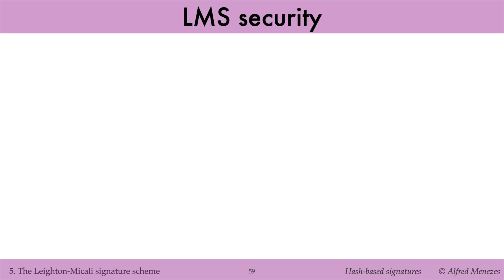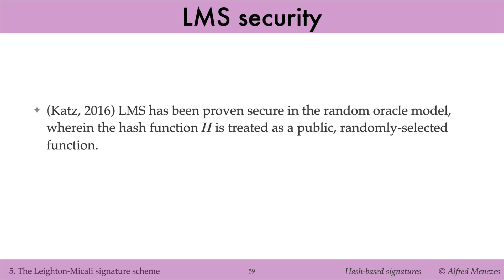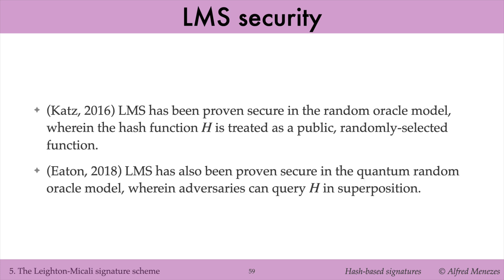The enhancements introduced by Leighton and Macaulay, including the use of unique prefixes for all hashed data, enable a formal security analysis of LMS. In 2016, Cats proved that LMS is secure in the Random Oracle model, where the hash function H is treated as a public, randomly selected function. Later, in 2018, Eaton proved LMS secure in the Quantum Random Oracle model, where adversaries can make queries in superposition to H. This provides assurance against certain kinds of attacks that might be plausible in the world of quantum computers.